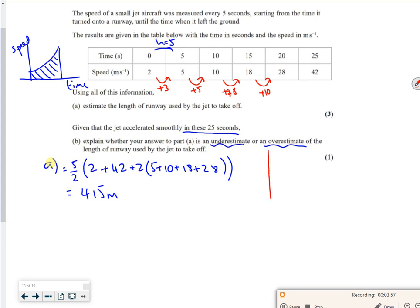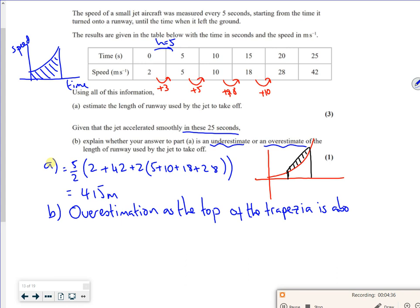So if I was to graph it, it'll kind of look like an exponential graph going up. So if I draw a trapezium in there, a nice big trapezium so you can see, or trapezia as it's singular, you can see that the top is above the curve. So it must be an overestimation. So it's an overestimation as the top of the trapezia is above the curve, the function, whatever you want to say.